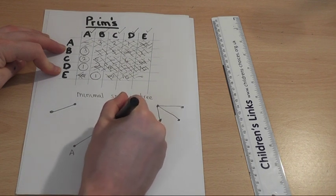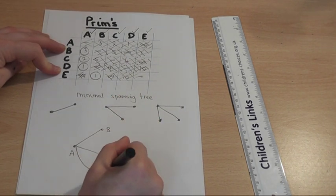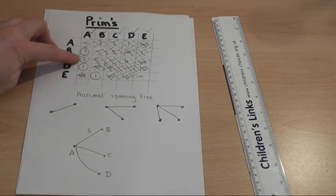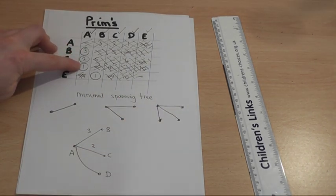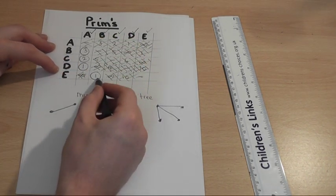So node A connects to B, C, and D. So B, C, and D: B was three, C was two, and D was one. E connects to C, to B—E to B with a weight of one.